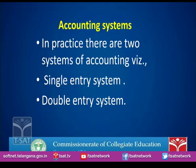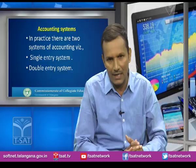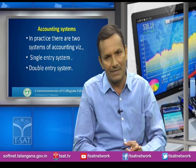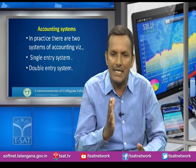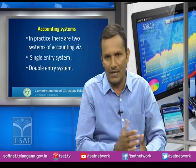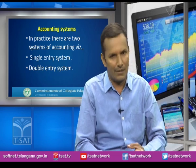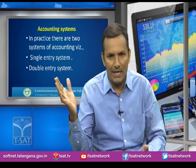In practice, there are two systems of accounting, based on how transactions are recorded. The first is the single entry system, which records only one aspect of a transaction. Since every business transaction has two aspects, recording only one is unscientific and incomplete. By single entry system, we cannot get a complete picture of the business or prepare final accounts, and converting it to double entry is laborious.